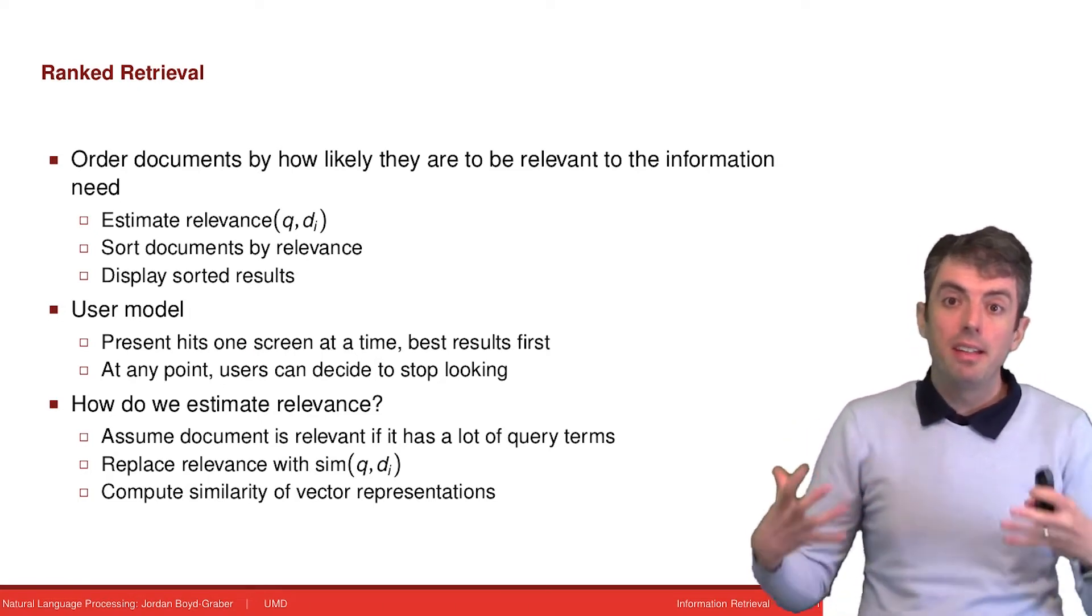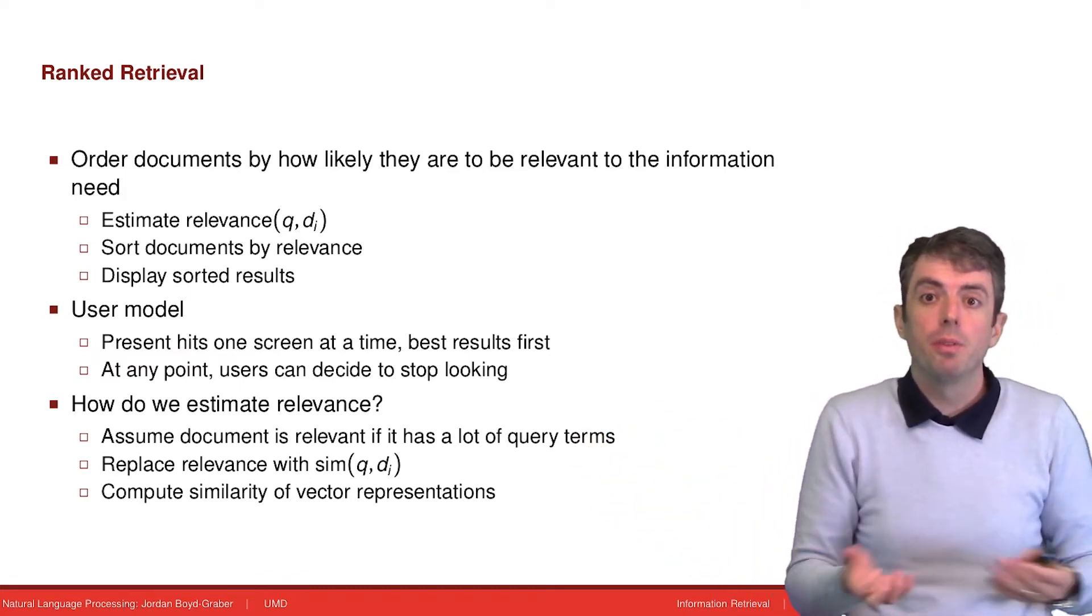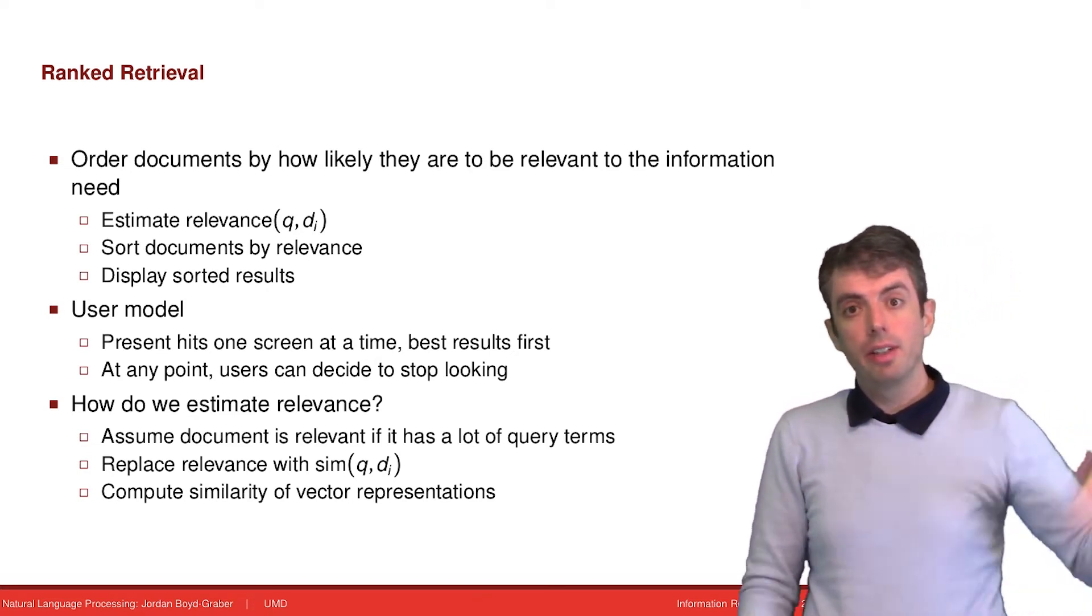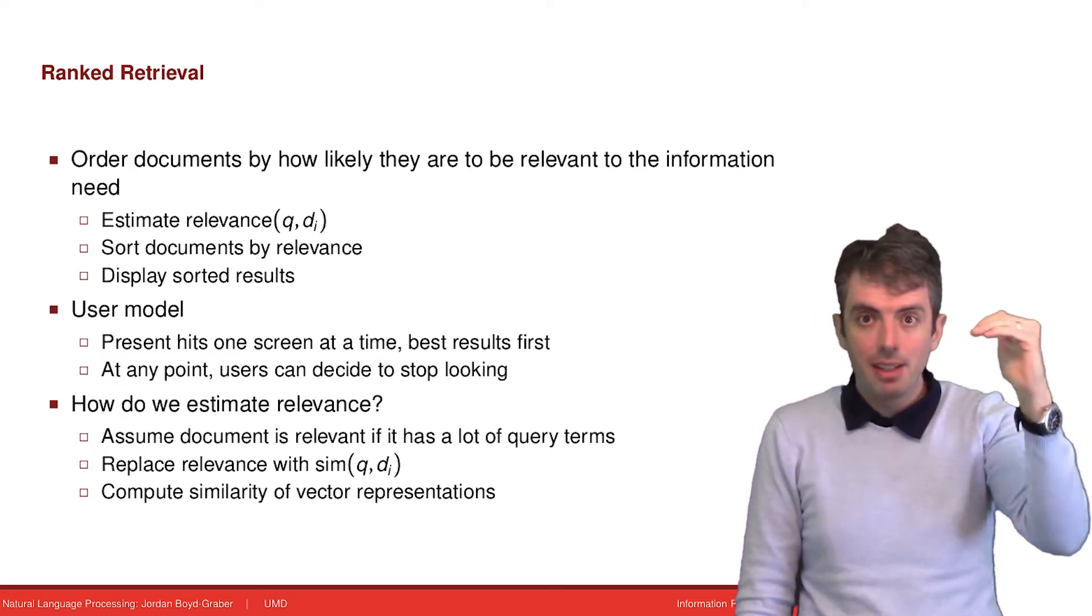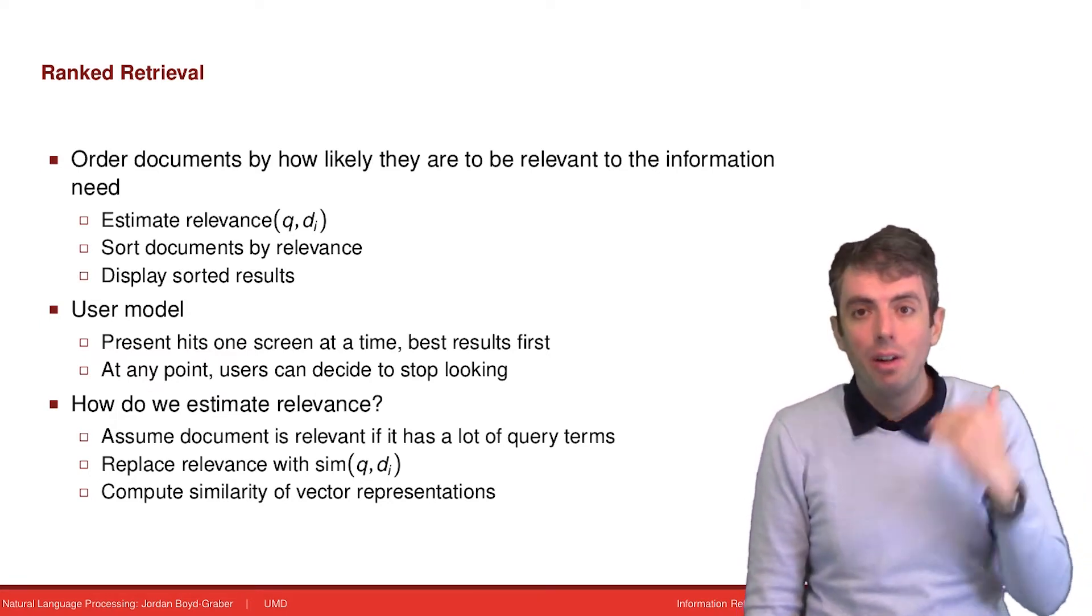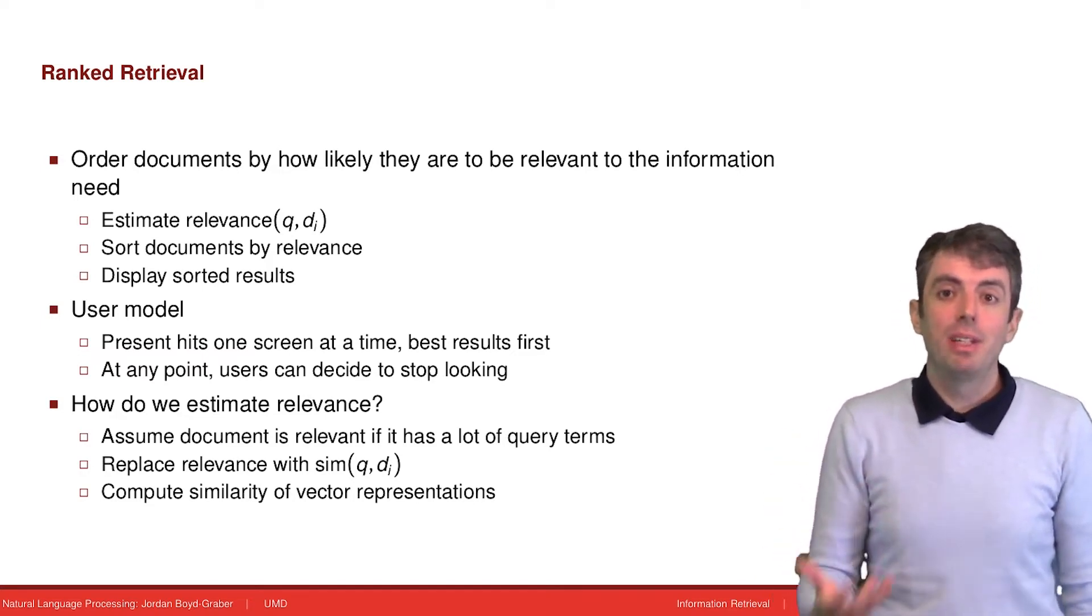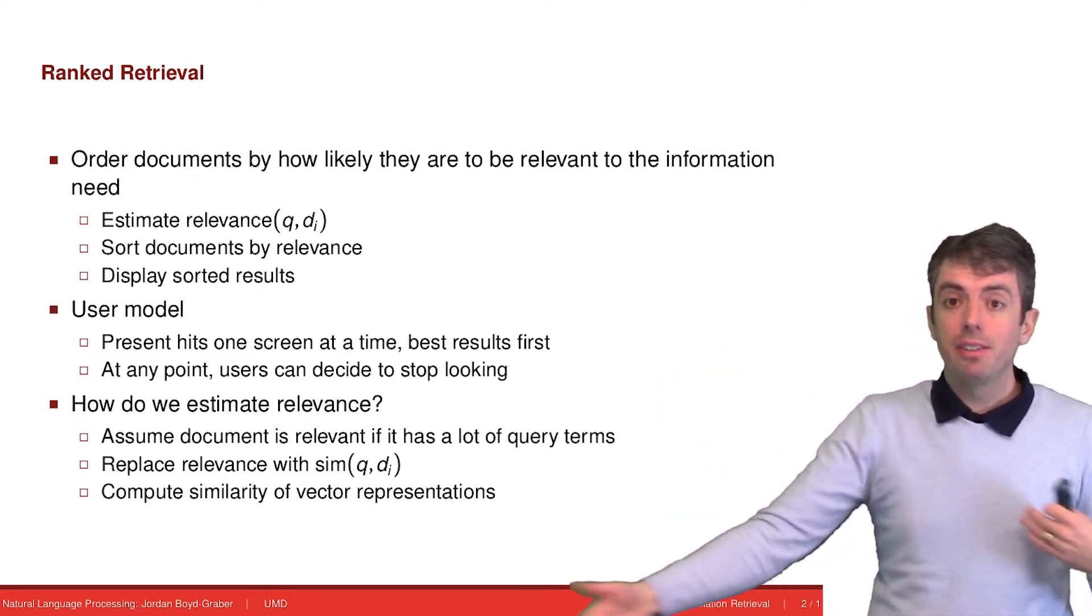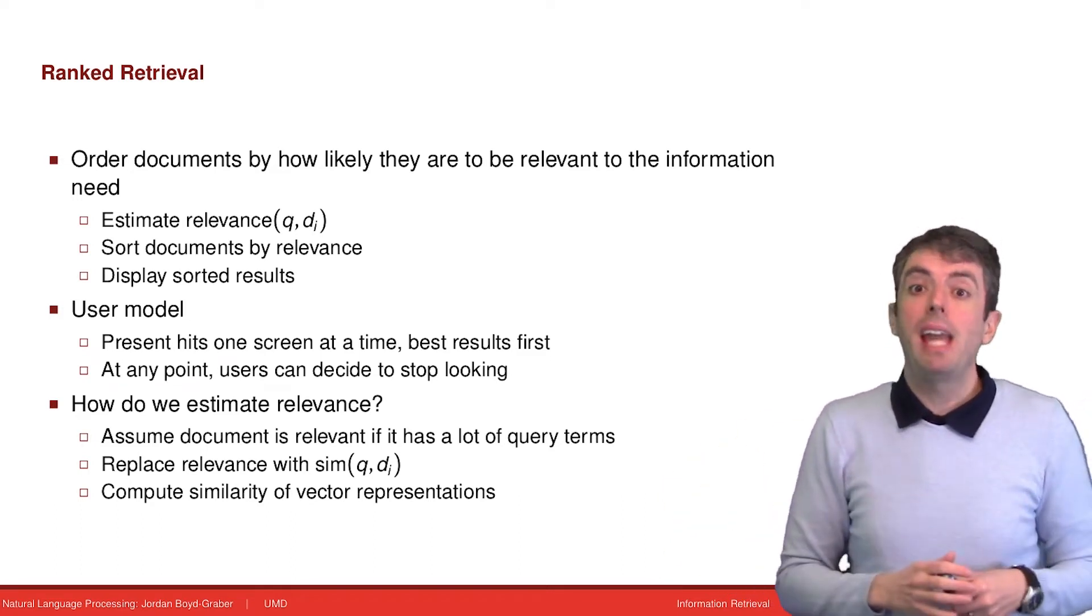As a result, instead of just a mass of documents that come back to the user and potentially overwhelms them, we're now going to be able to present a sorted list to the user, and the user can look at search result number one, see if that looks any good, look at search result number two, see if that looks any good, and hopefully if the ranking function has done a good job, they'll be able to find the document that answers their question more quickly and then stop.